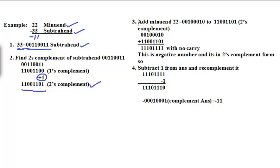In the next step, we have to add the minuend 22, which is equivalent to 0010 0010 in binary form — because 2 stands for 0010 in 4-bit binary. We add this to the two's complement of the subtrahend, which is 1100 1101.